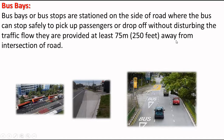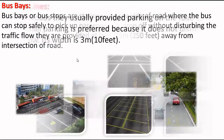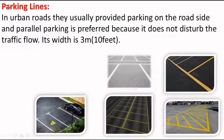The next element is parking lanes. In urban roads, parking is usually provided on the roadside, and parallel parking is preferred because it does not disrupt the traffic flow. The width of a parking lane is 3 meters or 10 feet.